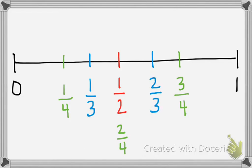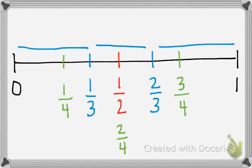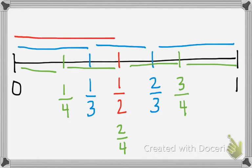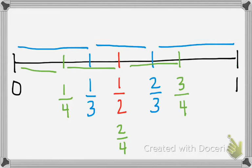I've divided our number line into thirds: 1-third, 2-thirds, and 3-thirds. I can take the same number line and divide it into fourths: 1-fourth, 2-fourths, 3-fourths, and 4-fourths. And last but not least, I have the number line also divided into halves: 1-half and 2-halves. Those benchmarks are going to be helpful for figuring out where fractions need to go.